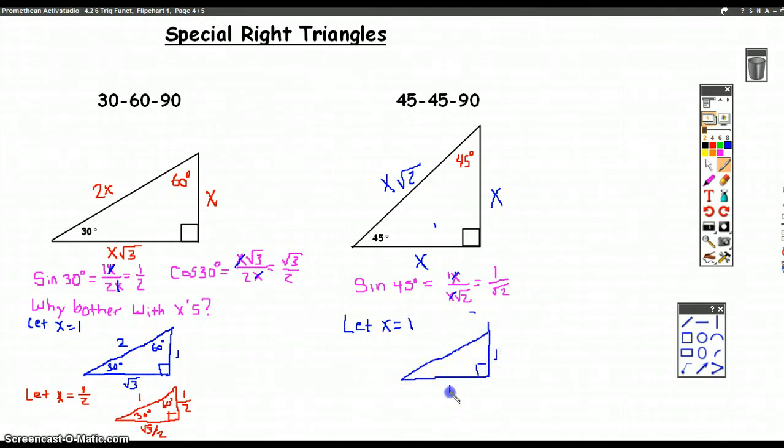Because when you do that, you get this version. When X is 1, because 1 times root 2 is root 2. You get that. And then if you do the sine of 45, it's opposite over hypotenuse, 1 over root 2, and much easier, right?